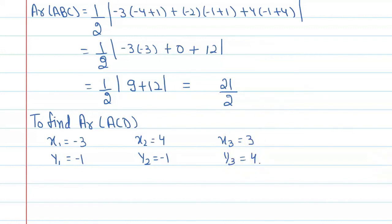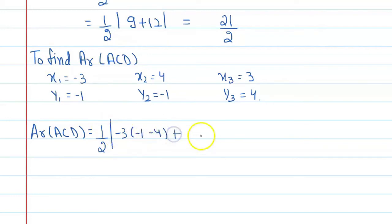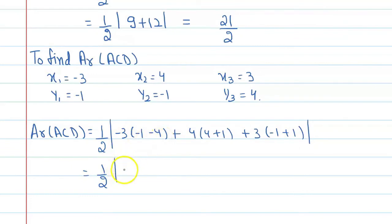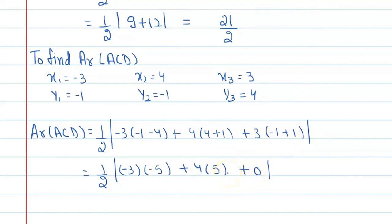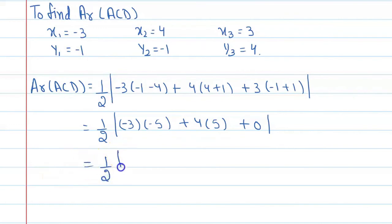Area of triangle ACD = 1/2 times modulus of [(-3)(-1 - 4) + 4(4 - (-1)) + 3((-1) - (-1))] = 1/2 times modulus of [(-3)(-5) + 4(5) + 3(0)] = 1/2 times [15 + 20 + 0] = 35/2.